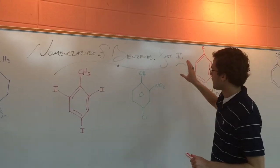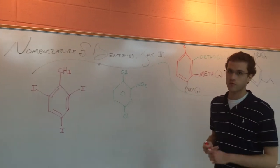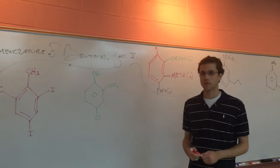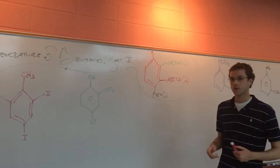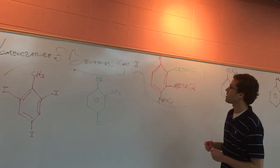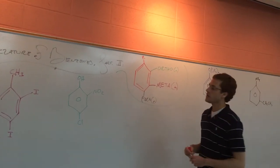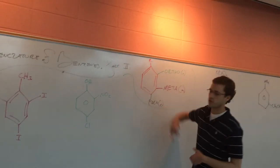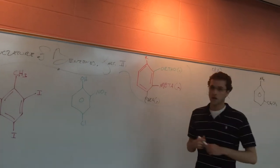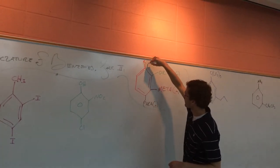In the first video we talked about some basic rules for how you name benzenes, either by numbering the carbons or by using a system where you name things based on their relative positions to a certain R group or a certain halogen attached to the benzene. So a quick recap of that is: if we have an R group here,